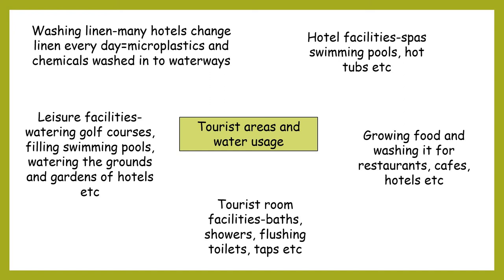Whilst sometimes the bed linen is pure cotton, quite often there's polyester and other materials in these linens, and you then end up with microplastics getting washed into the waterways — little fibres of plastic coming out of polyester clothes and linens, ending up in rivers and waterways. And of course, all the chemicals used to actually clean the linen wash out of industrial washing machines into the local waterways. Especially if we're talking about tourism in LICs, there's not really any rules and regulations on keeping that under control.